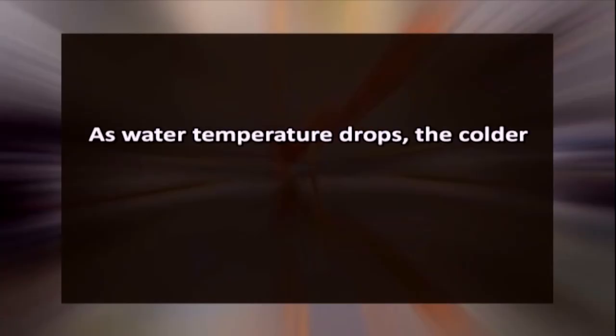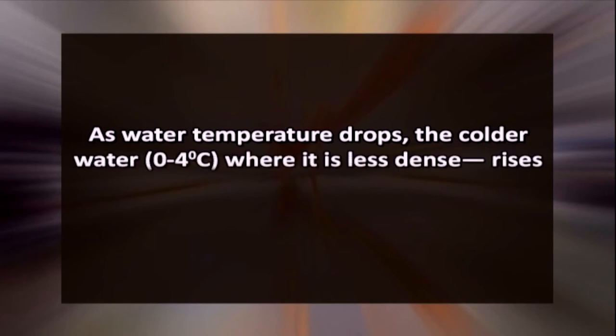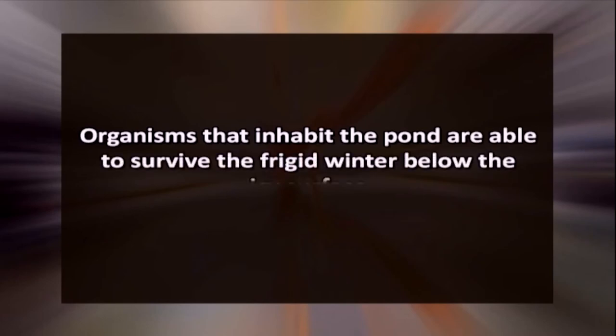As water temperature drops, the colder water 0 to 4 degree centigrade where it is less dense rises to the pond surface. It freezes to form a lid of ice. This ice insulates the water below from the wintry chill so that it is less likely to freeze. Organisms that inhabit the pond are able to survive the frigid winter below the icy surface.